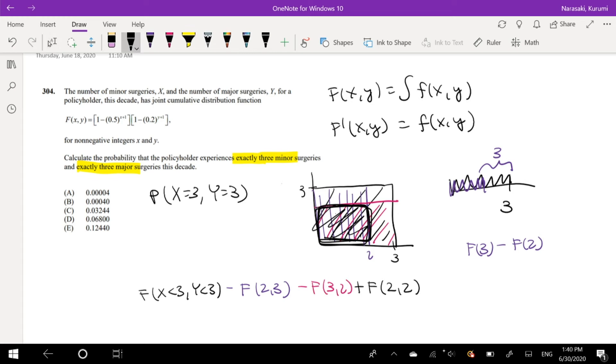1 minus 0.5^(3 + 1). This whole thing multiplied by 1 minus 0.2^(3 + 1), right?